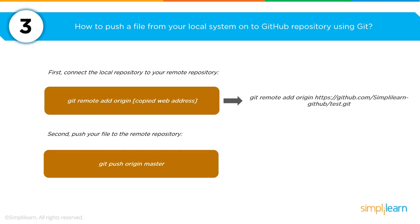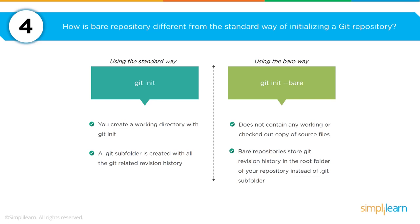If you want to push code from your local system to a GitHub repository, first connect the local repository to a remote repository using the command: git remote add origin, followed by the path to the GitHub repository. You could also work with GitLab or a private Git repository for your development team. Then use git push origin master to push your local files out to the master environment.